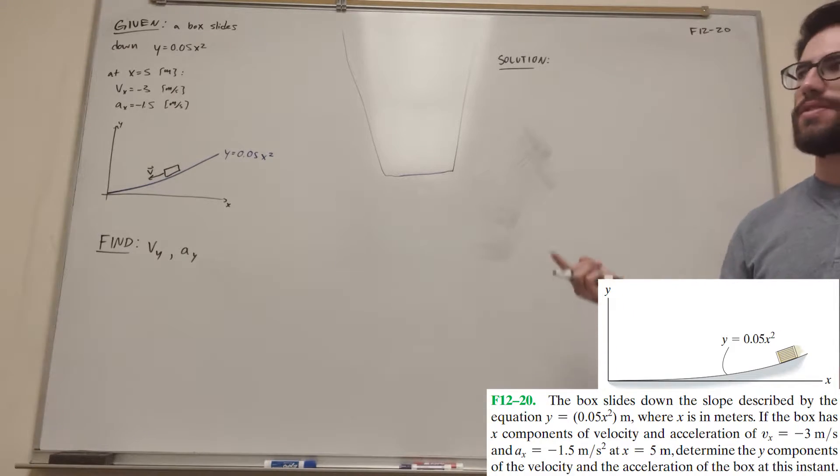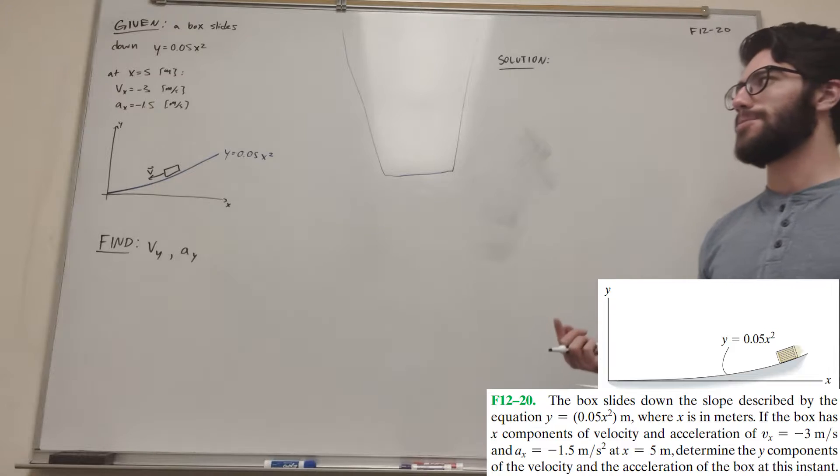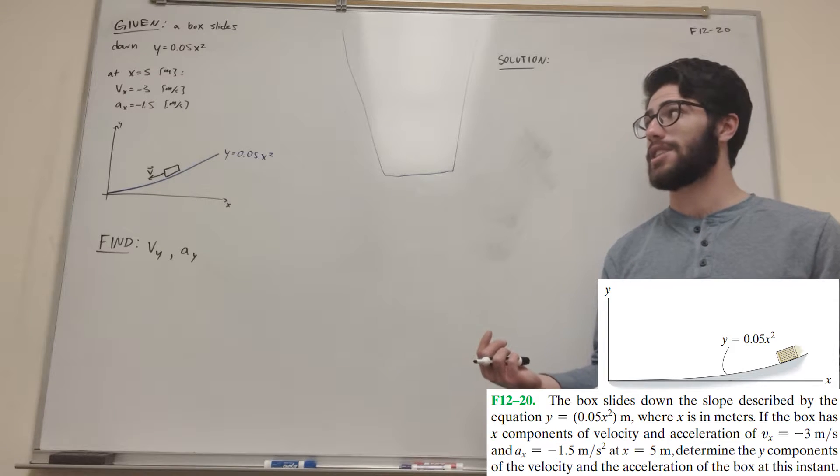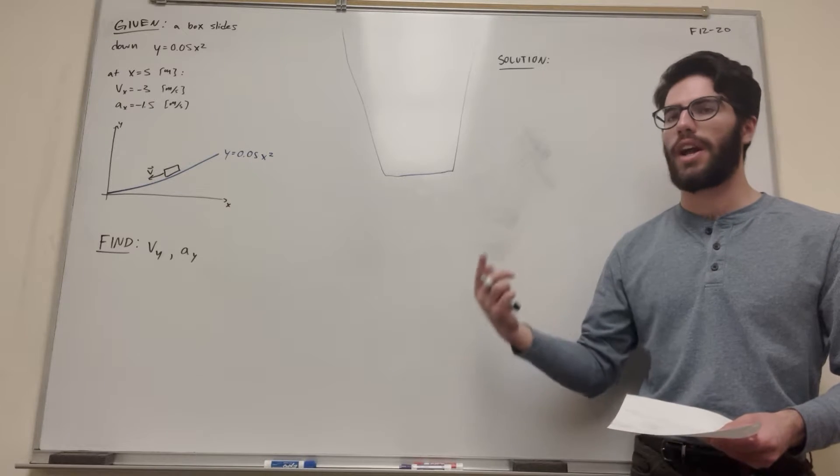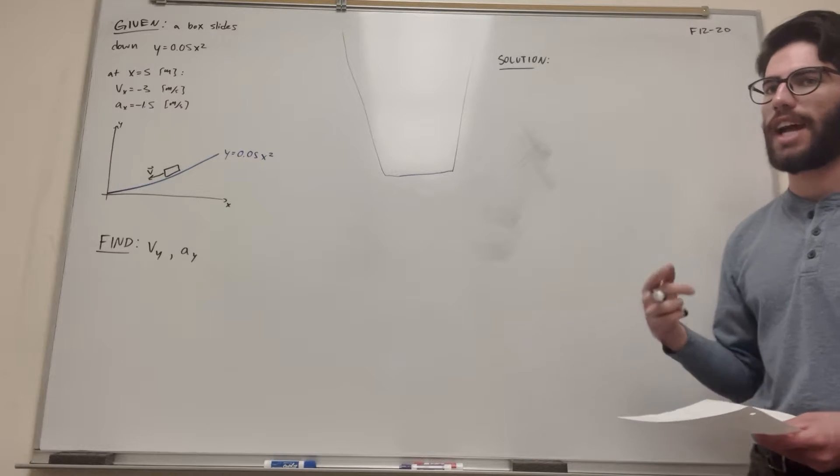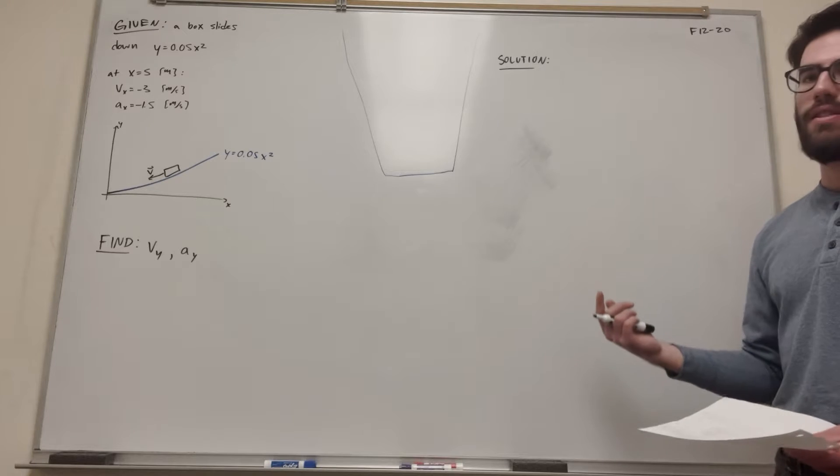You have a box that's sliding down a slope defined by that equation, and it tells us that at 5 meters, our velocity in the x direction is negative 3 meters a second, and our acceleration in the x direction is negative 1.5 meters a second. Now our goal is to find velocity in the y direction and acceleration in the y direction at that moment. So let's go ahead and figure that out.